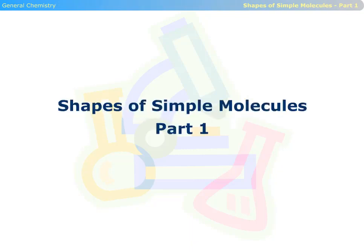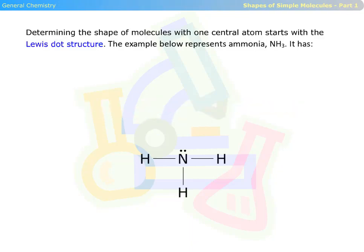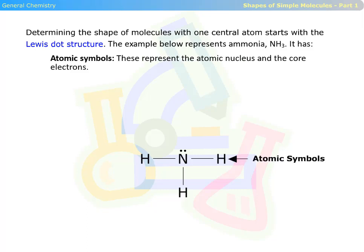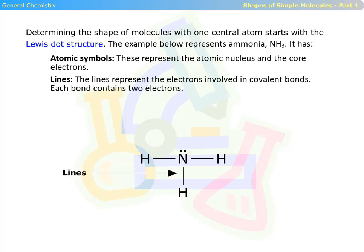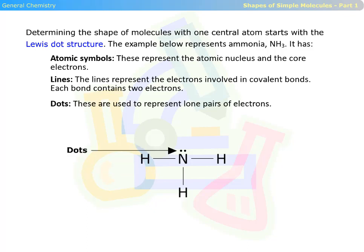Welcome to Shapes of Simple Molecules, Part 1. Determining the shape of molecules with one central atom starts with the Lewis dot structure. The example below represents ammonia. It has atomic symbols, which represent the atomic nucleus and the core electrons. The lines represent the electrons involved in covalent bonds — each bond contains two electrons. Dots are used to represent lone pairs of electrons.